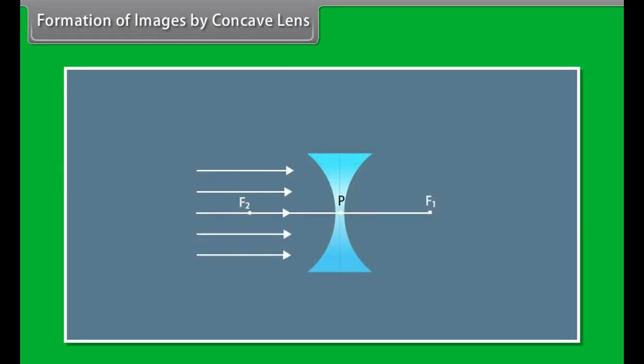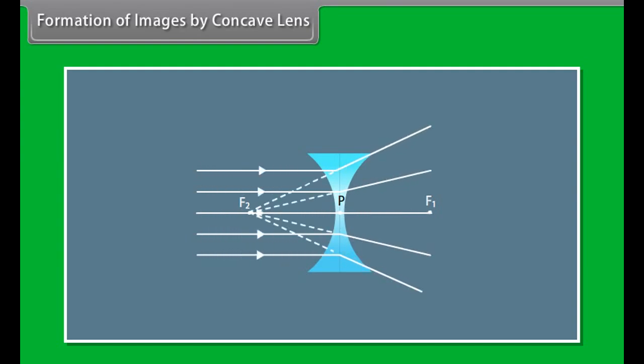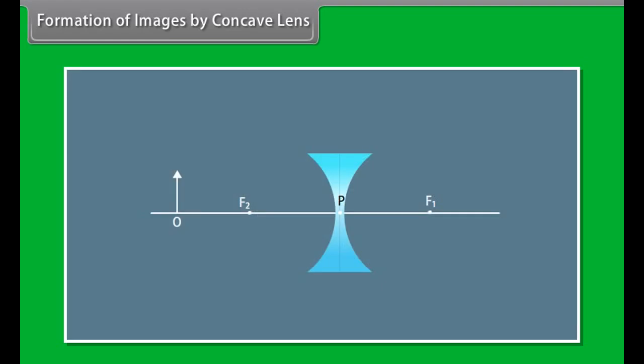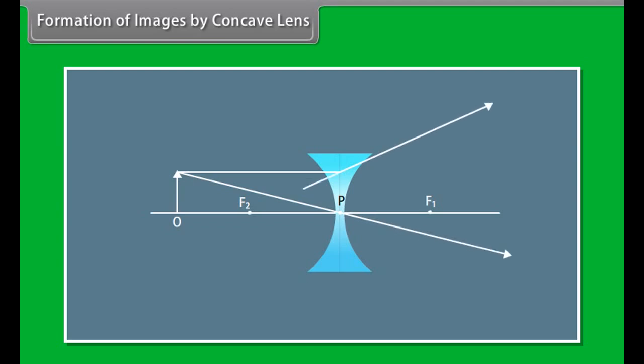Formation of images by concave lens: When the object is at infinity, the image forms at F on the same side — virtual, erect, and diminished to a point. When the object is placed at any distance, the image forms on the same side between the optical center and F — virtual, erect, and diminished.